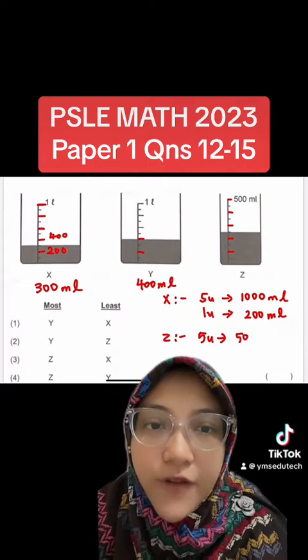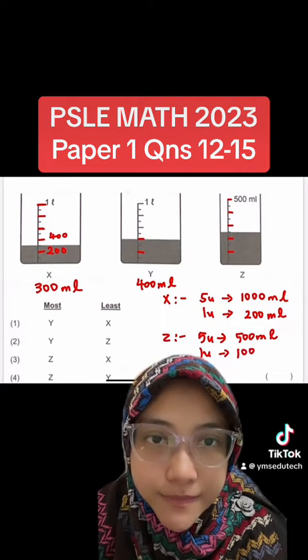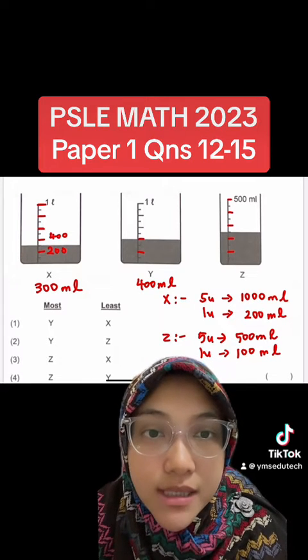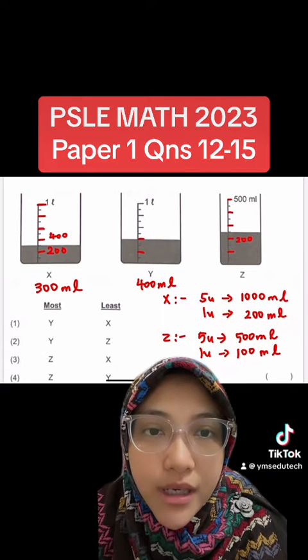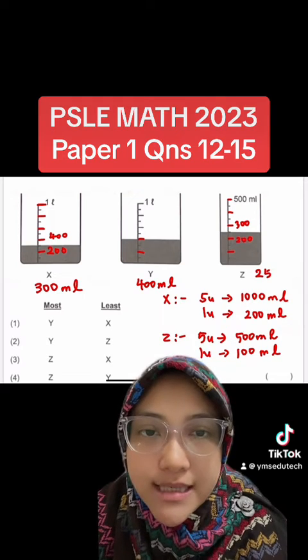Five units represent 500 milliliters. One unit represents 100 milliliters. The volume of water in container Z, which is in between 200 and 300 milliliters, gives us 250 milliliters.